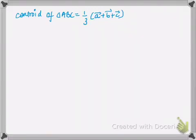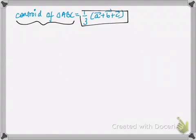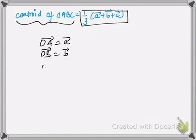Hello and welcome to my tutorial on vector geometry. In this tutorial we'll be deriving a theorem for the centroid of triangle ABC, which equals one third of vector A plus vector B plus vector C. Here vector A is the position vector for OA, vector B is the position vector for OB, and vector C is the position vector for OC.